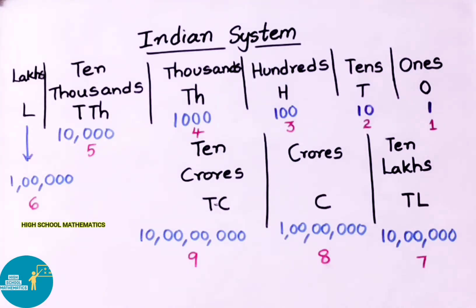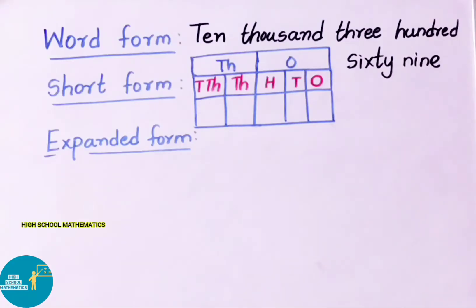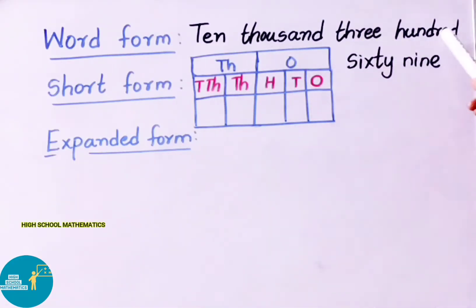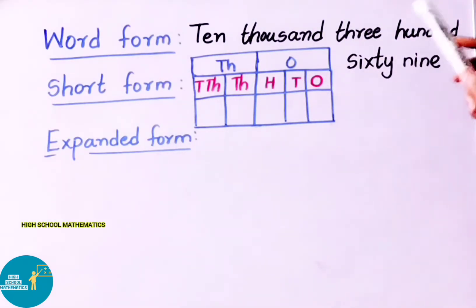Now, in the Indian system, we will look at how to write numbers in short form, word form, and expanded form. Let us take an example. First, let us find the number name (word form) and expanded form. In short form, we write it as the numeral.